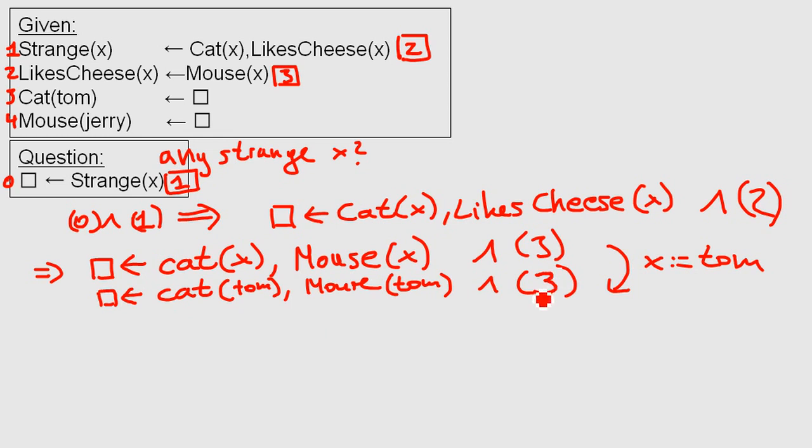So now we have this new question. Do we have a Tom that is a cat and a Tom that is a mouse? And this is supposed to be a three and we combine it here with the rule number three or with the clause three. Cat Tom and cat Tom over here will cancel each other out. So we left with Mouse Tom. We use this as well.